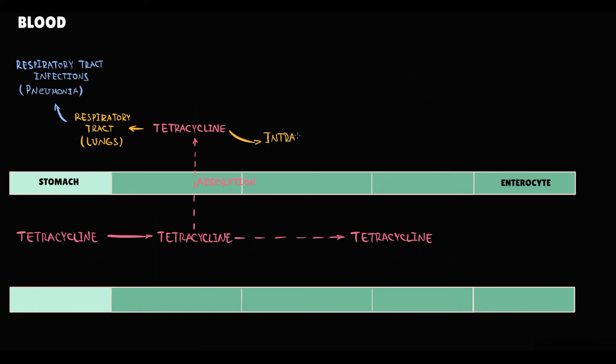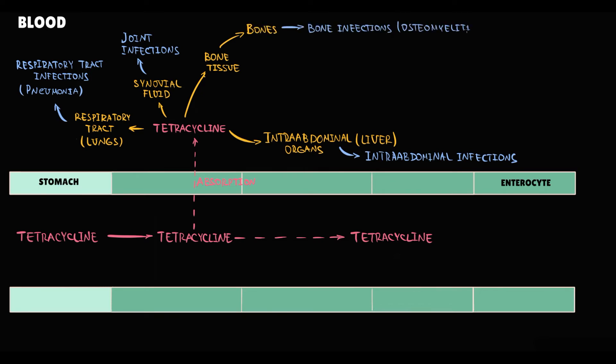Also, they accumulate in the intra-abdominal organs, as the liver for example. So they can be used in treatment of various intra-abdominal infections. Because tetracyclines penetrate into the synovial fluid in the joints, they can be used for staphylococcal joint infections. Also, because they penetrate into the bone tissue, they can be used for bone infections, as osteomyelitis. Also, because tetracyclines easily penetrate into the soft tissues, we can use them in treatment of soft tissue infections. In stomatology, for example, they can be used in treatment of periodontal diseases.